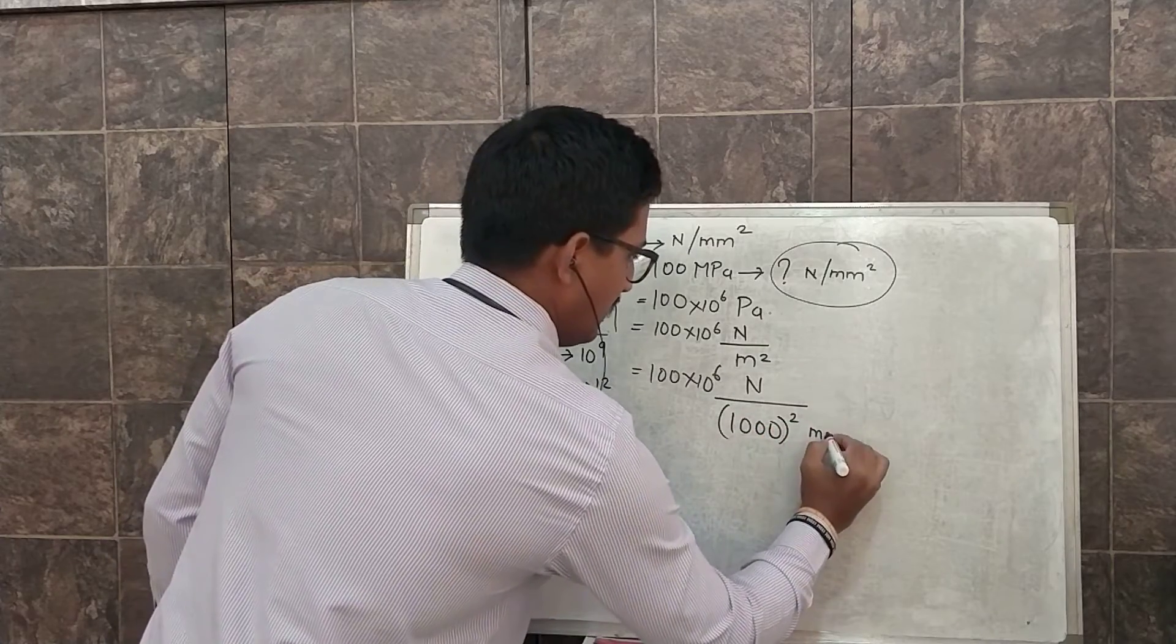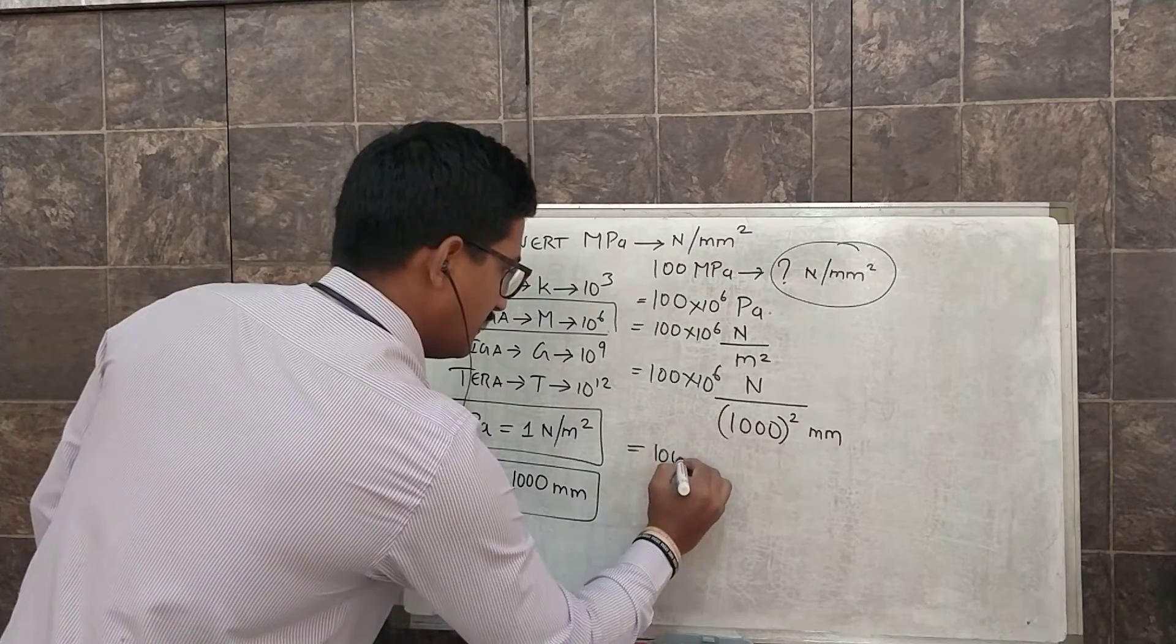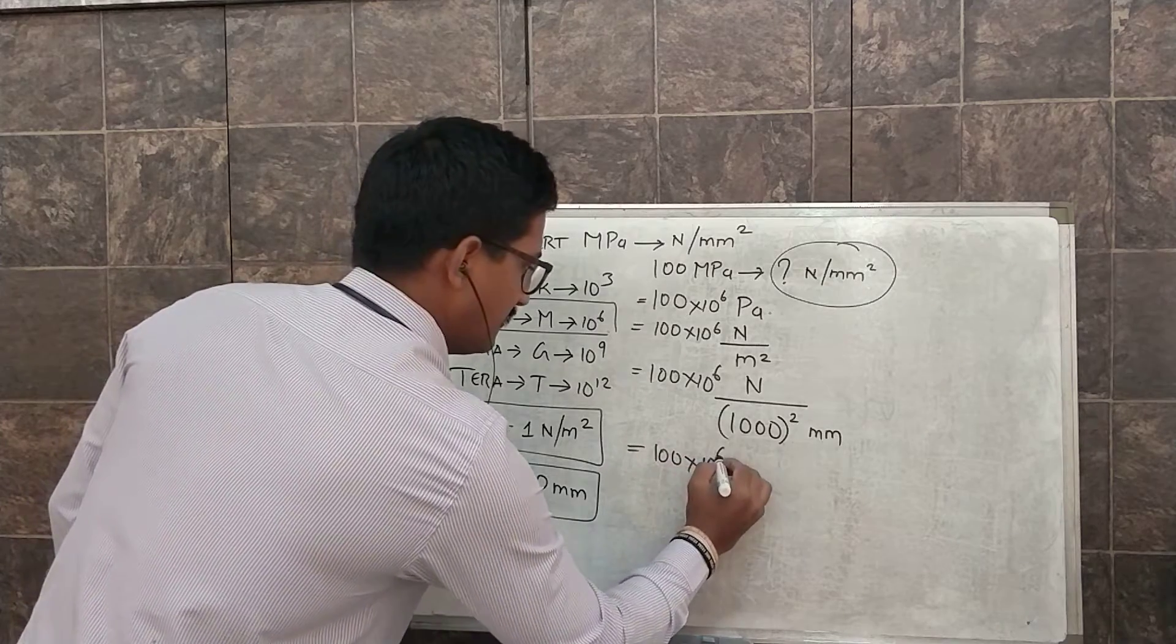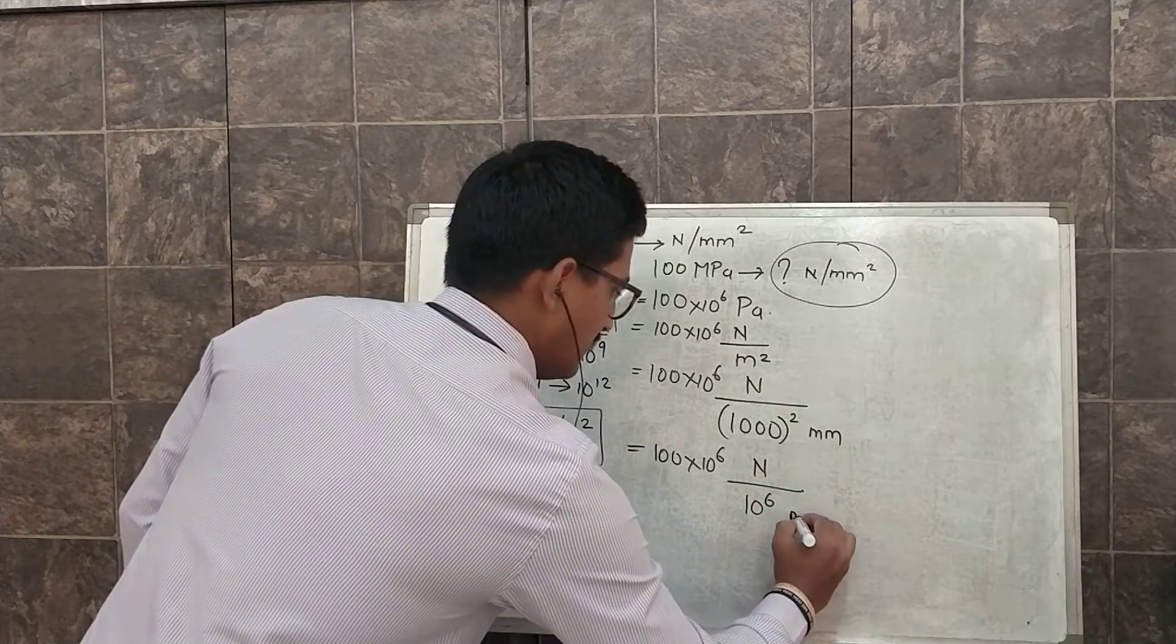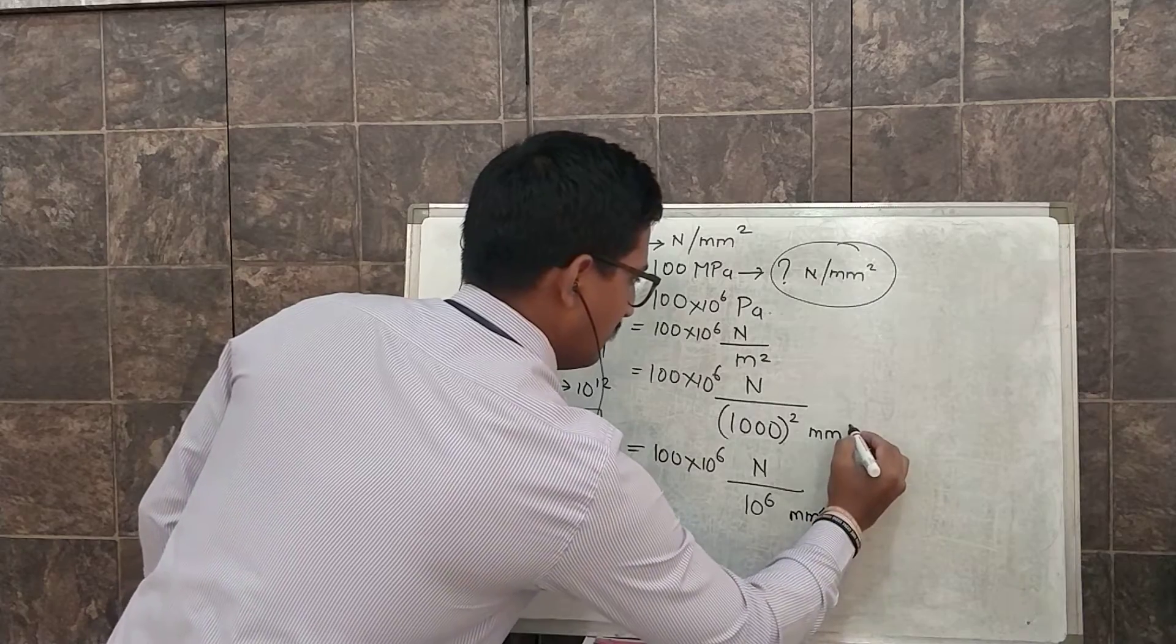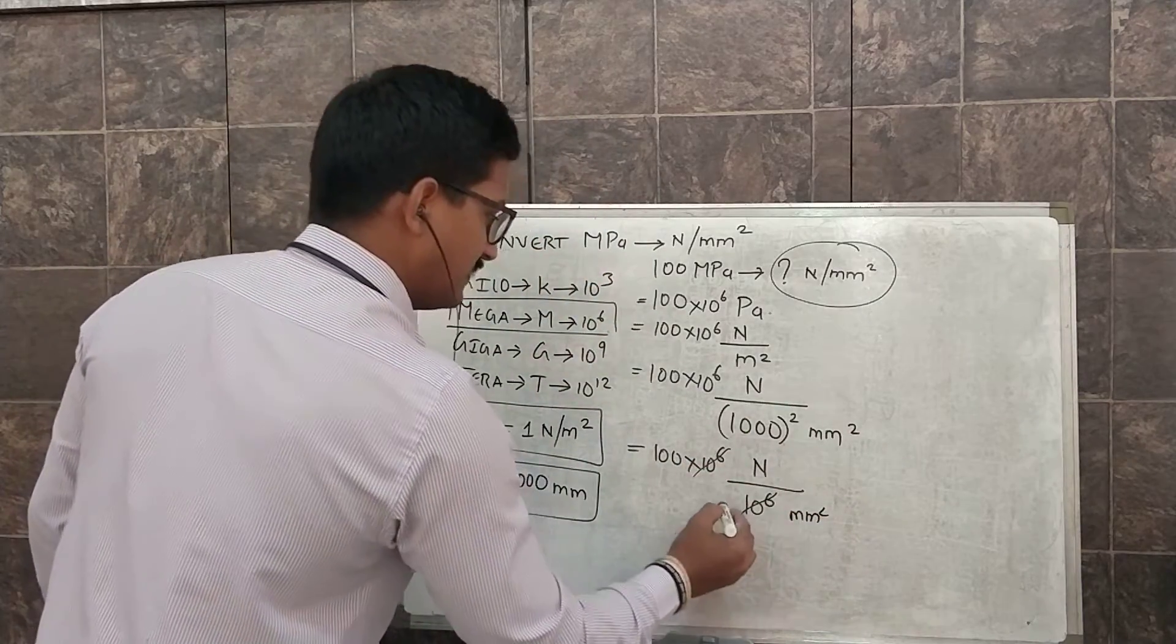So now you can see this 100 into 10 raised to 6 Newton, 10 raised to 6 mm². This will be square since it is squared, so 10 raised to 6, 10 raised to 6 gets cancelled.